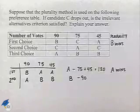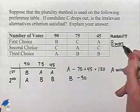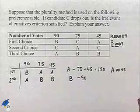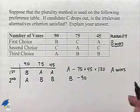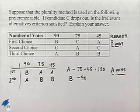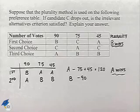This is exactly what happens in this case. Notice that B wins using plurality, C drops out, we just do a recount, but now A wins. And so we'd have to say that in this case, the irrelevant alternatives criterion is not satisfied.